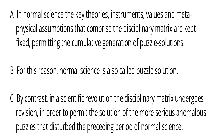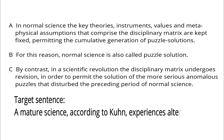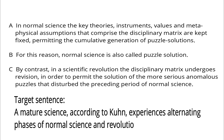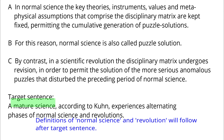B: For this reason, normal science is also called puzzle solution. C: By contrast, in a scientific revolution the disciplinary matrix undergoes revision in order to permit the solution of the more serious anomalous puzzles that disturbed the preceding period of normal science. Target sentence: 'A mature science, according to Kuhn, experiences alternating phases of normal science and revolutions.' The target sentence defines the notion of mature science in terms of the alternation between normal science and revolution, so we can expect that the definitions of normal science and revolution will follow. The target sentence should come before these definitions.